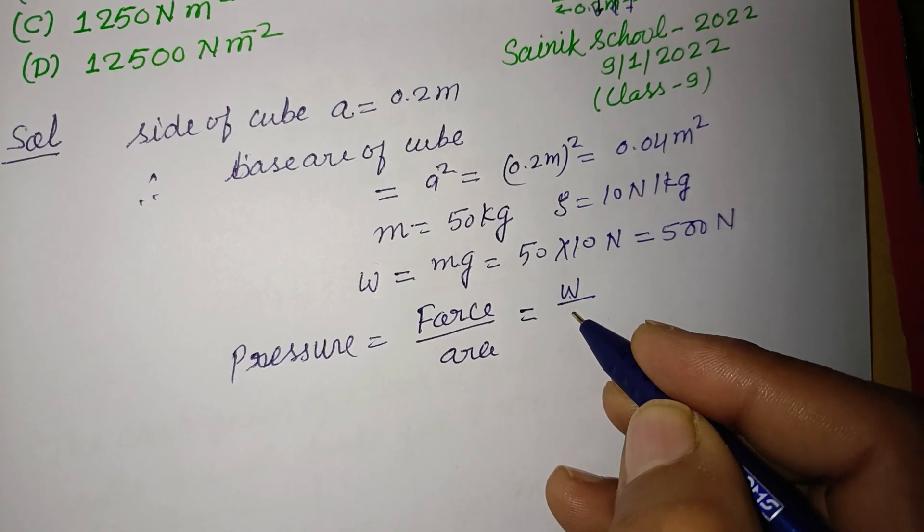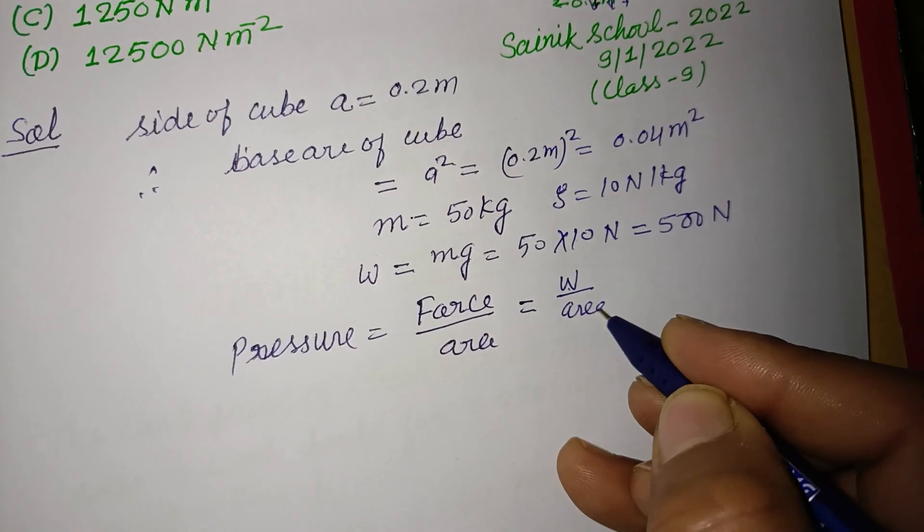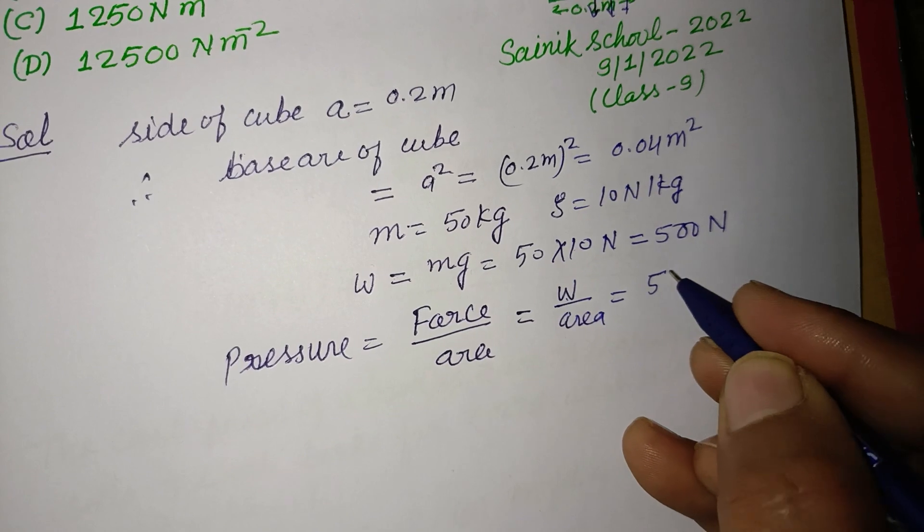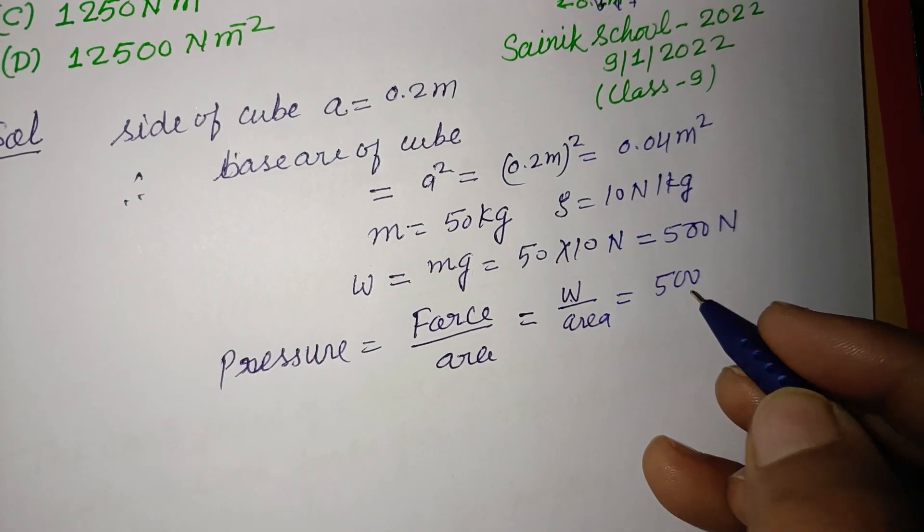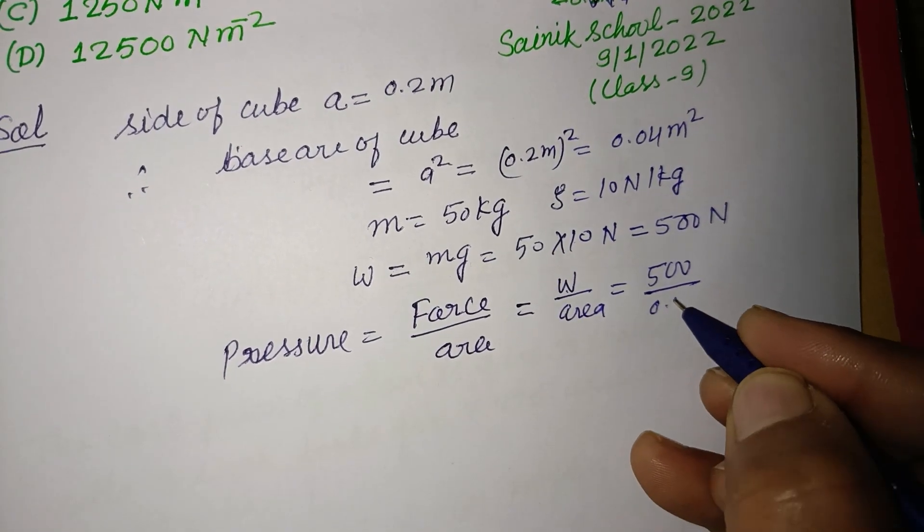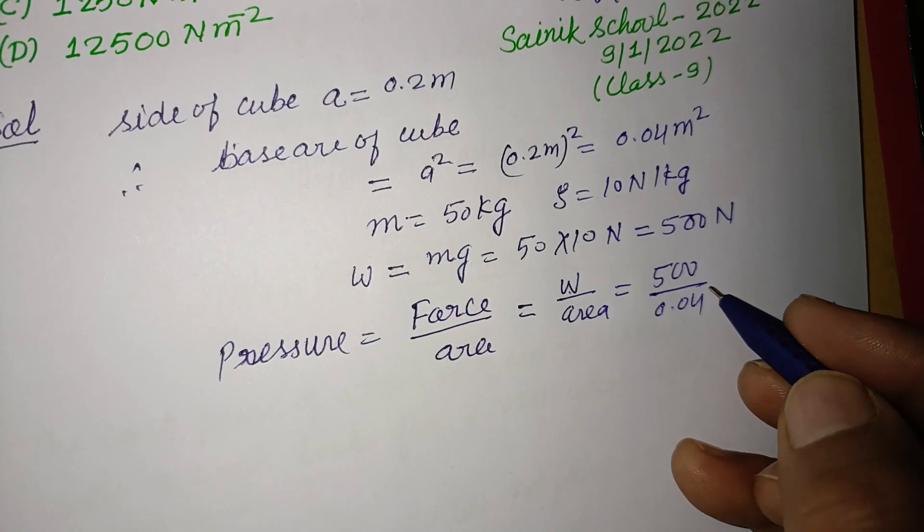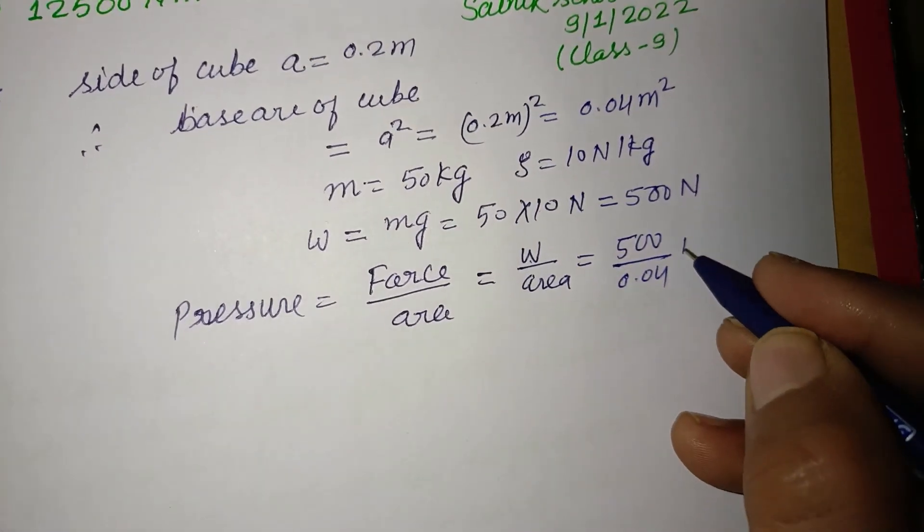So weight upon area, it is 500 newtons upon 0.04 meters squared.